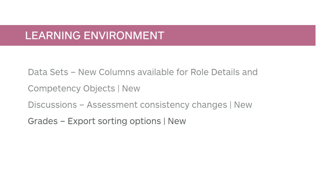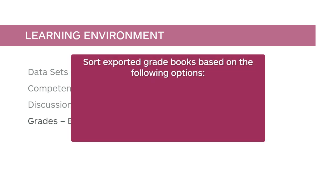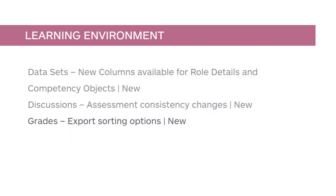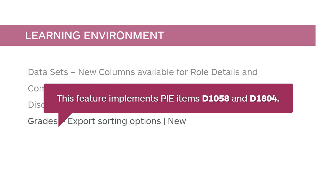This feature introduces the ability to sort exported gradebooks based on the following options: Org Defined ID, Username, Last Name, and First Name. The sort options available are based on the User Information Privacy permissions for the Role. This feature implements PI Items D1058 and D1804.